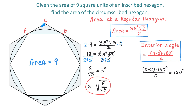To find side AC, from C I will draw a perpendicular down and form a right triangle. In this triangle, the angle is half of 120 degrees, which is 60 degrees. Side AD is half of square root of 6 over square root of 3, so this side equals square root of 6 over square root of 3, all divided by 2.